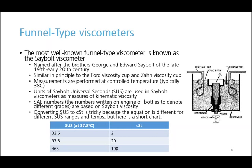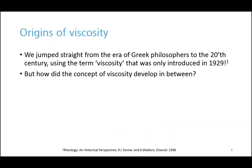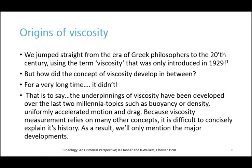Now, by going from ancient times to Saybolt viscometers, I jumped straight from the era of Greek philosophers straight to the 20th century, using the term viscosity that was only even introduced in 1929. So the question is, how did the concept of viscosity develop in between? Well, for a long time it didn't — but that's a bit of a simplification. The underpinnings and concepts upon which viscosity measurement would be based developed over the last two millennia, dating as far back as Greek times up to the 16th and 17th century.